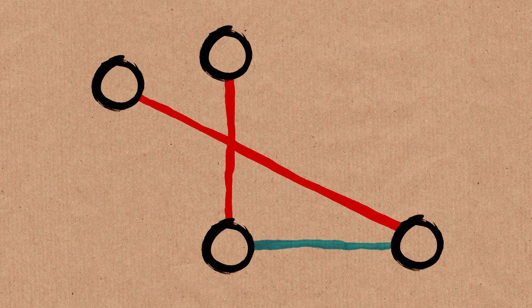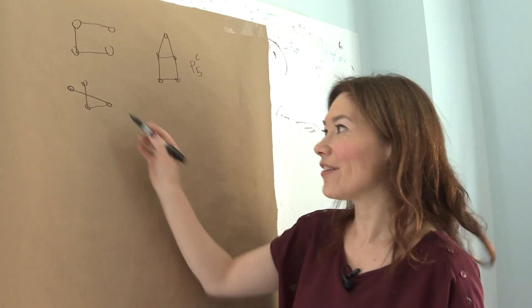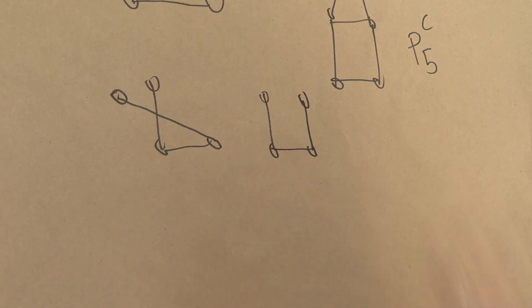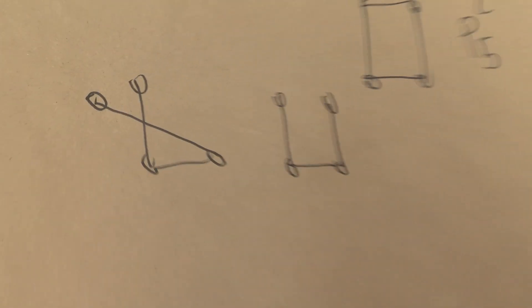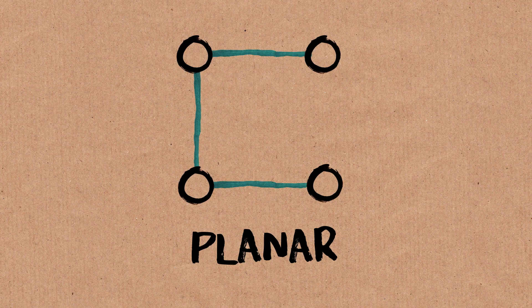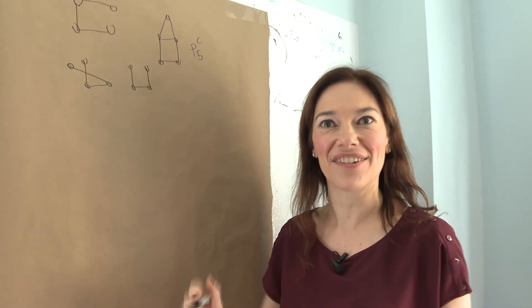They just intersect because I drew it like this. I could have drawn it like that. So a graph is planar if you can draw it in a plane or on a piece of paper in such a way that two edges only intersect where you intended them to intersect, only intersect at a vertex.